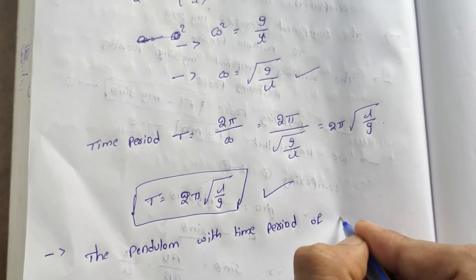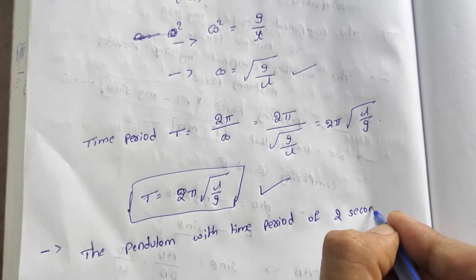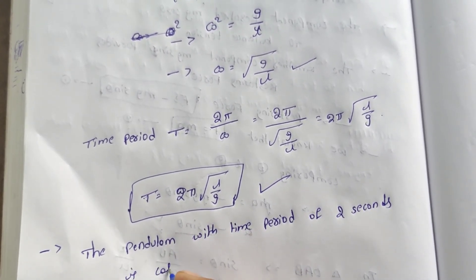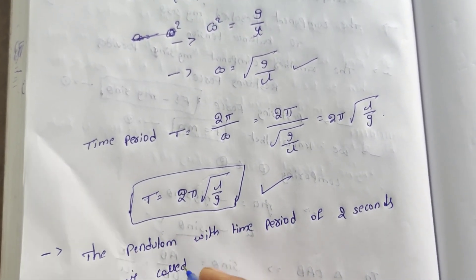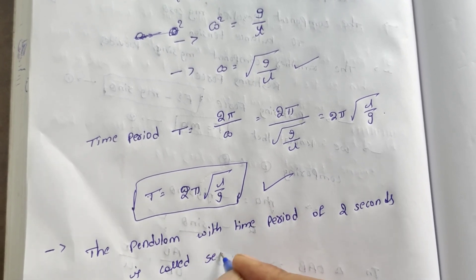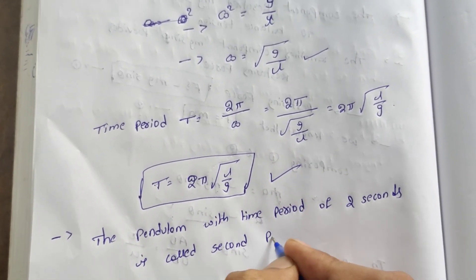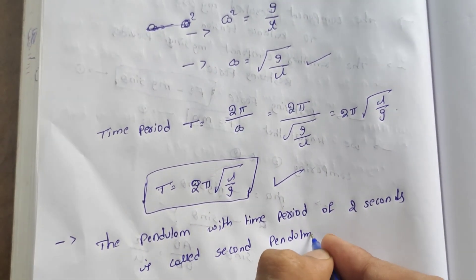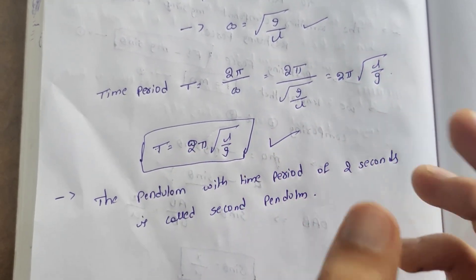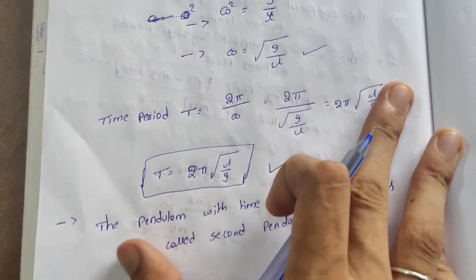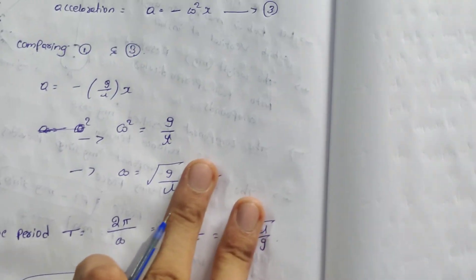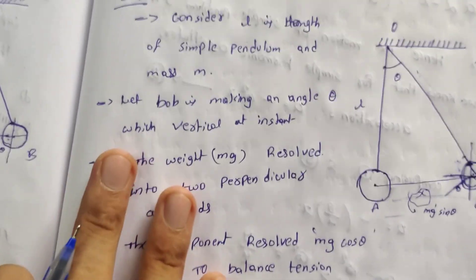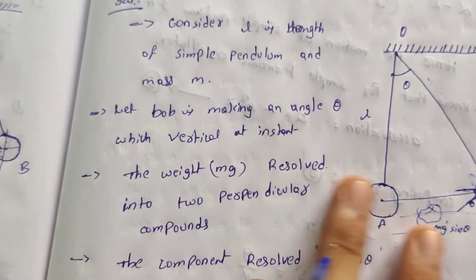Two seconds is called a second pendulum. So friends, overall, simple harmonic pendulum — remember the time period formula T = 2π√(L/g).